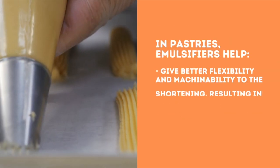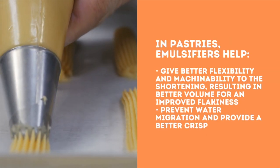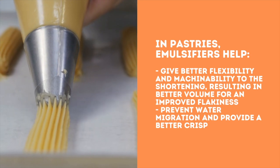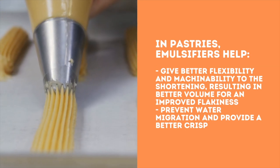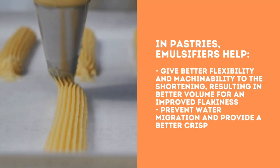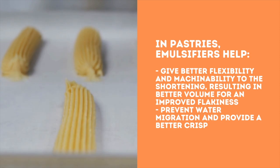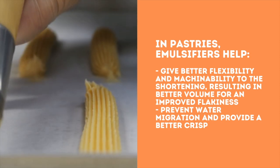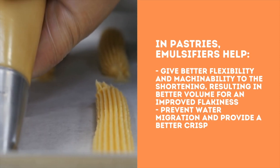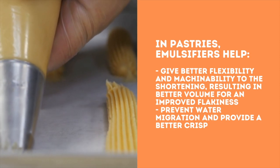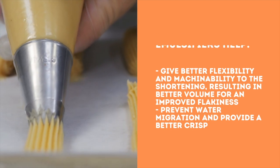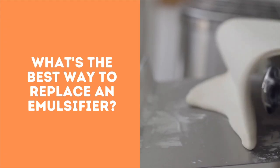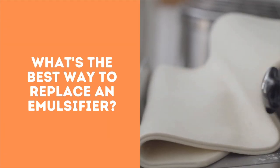In pastries, emulsifiers help give better flexibility and machinability to the shortening, resulting in better volume for improved flakiness, prevent water migration, and provide a better crisp. What's the best way to replace an emulsifier?